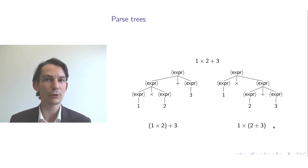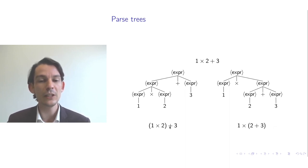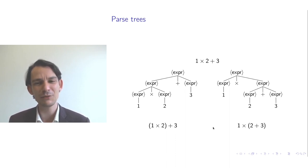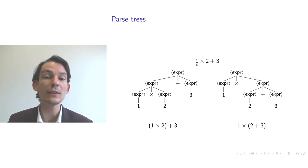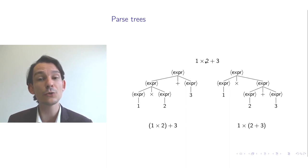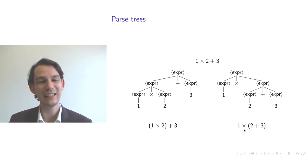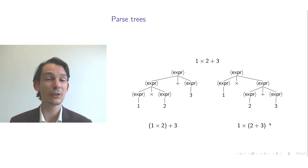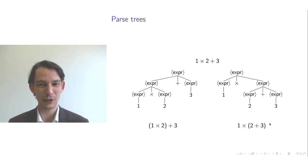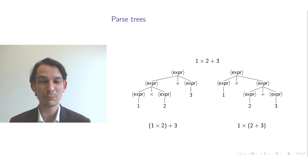The evaluation results of these two groupings differ. For example, with 2 times 2 plus 3: grouping as (2 times 2) plus 3 gives 4 plus 3 equals 7, while grouping as 2 times (2 plus 3) gives 2 times 5 equals 10. So different parse trees can lead to different computed values, making ambiguity resolution essential.